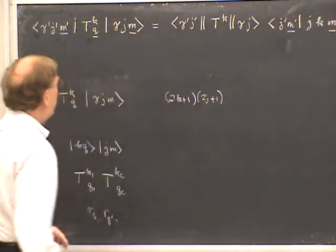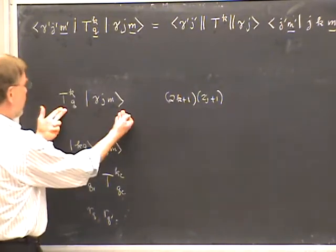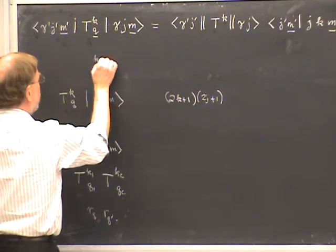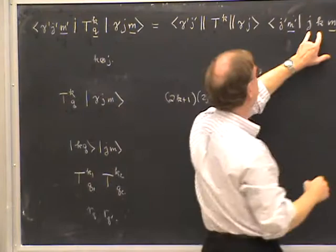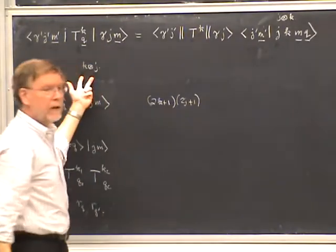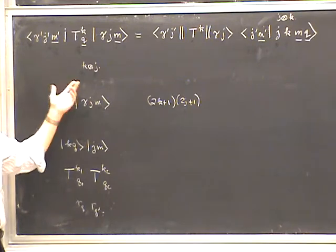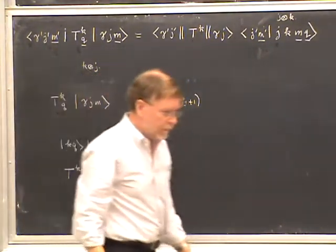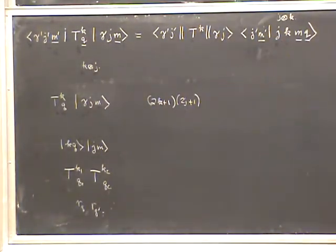There is one tricky thing: looking at the kets, you'd think that what you're doing is forming K times J. But actually, if you look at the Clebsch-Gordon convention, it's the other way around — it's J times K being done here. The fact that these are swapped is purely a matter of convention and has nothing to do with the essential ideas, but it makes it slightly harder to remember. You have to remember to do this in the right order.